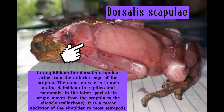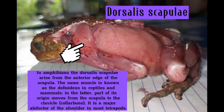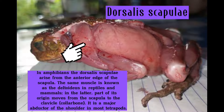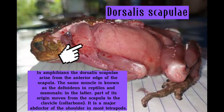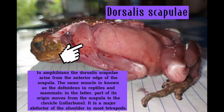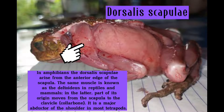In amphibians, the dorsalis scapulae arises from the anterior edge of the scapula. The same muscle is known as the deltoidus in reptiles and mammals. The latter part of its origin moves from the scapula to the clavicle or collarbone. It is a major abductor of the shoulder in most tetrapods.